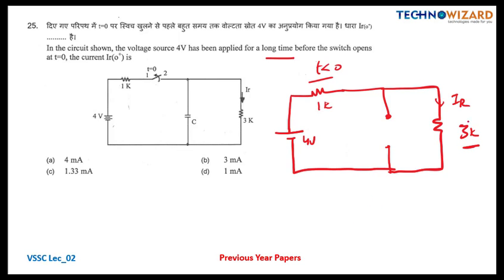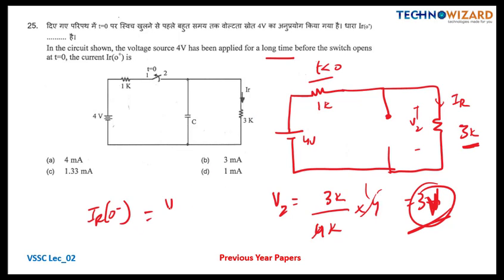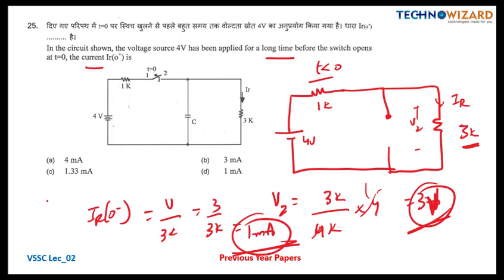What will be the voltage across 3K? Applying the voltage division rule: V2 equals 3K divided by (1K + 3K) into 4 volts, which gives 3 volts. So the current IR(0−) equals 3 volts divided by 3K, which equals 1 milliampere. They asked us to find IR(0+). We know IR(0−) is always equal to IR(0+) in transient state. Therefore IR(0+) equals 1 milliampere — option D is the correct answer.